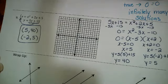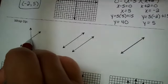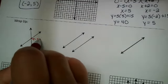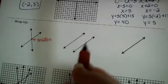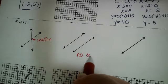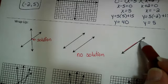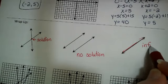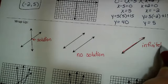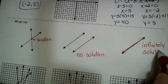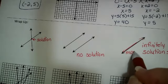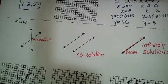To recap: when you have a system of equations, the goal is to find where they intersect — that is the solution. If the lines are parallel, there are no solutions because they never intersect. If the lines coincide — one on top of the other, the same line — there are infinitely many solutions.